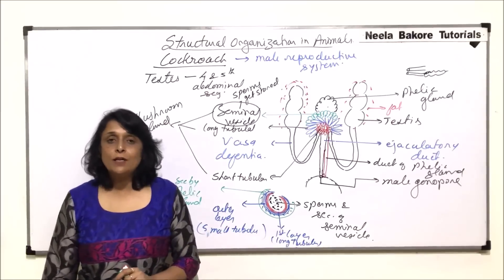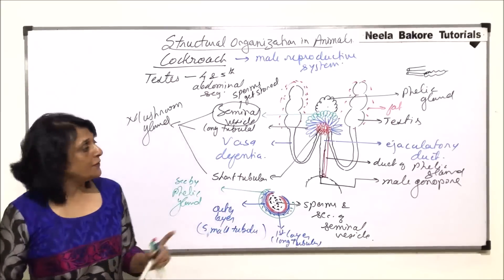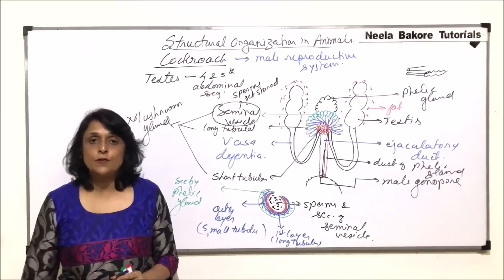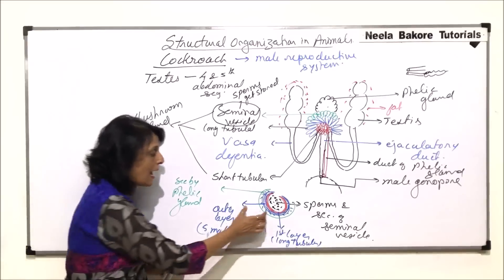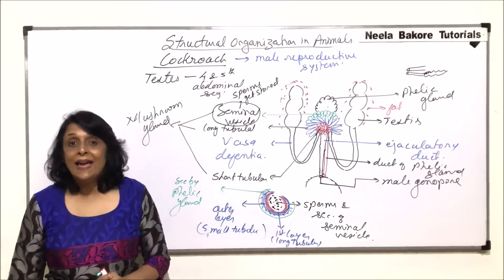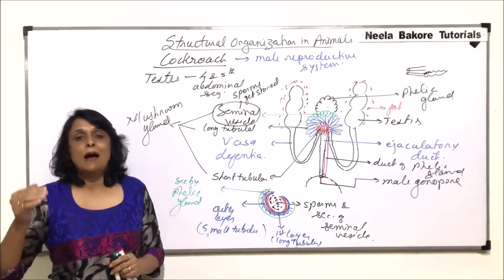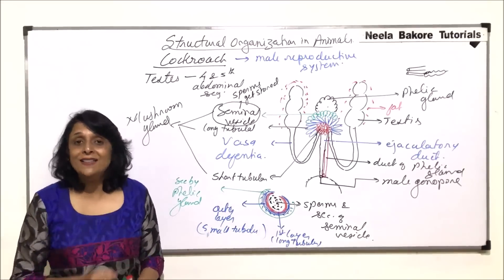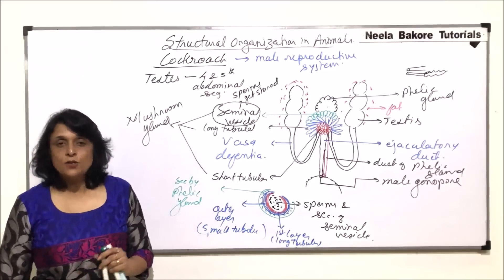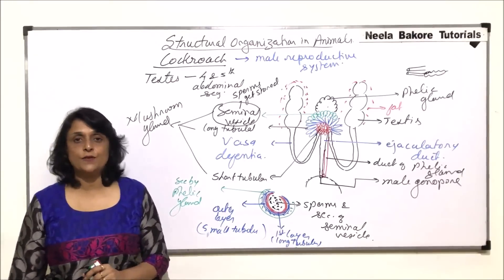So this is the male reproductive system. Now, after this, we'll take the female reproductive system, and then we'll try to understand how this structure helps when the sperms come out and they fertilize the eggs. So in the next part, we'll take the female reproductive system.